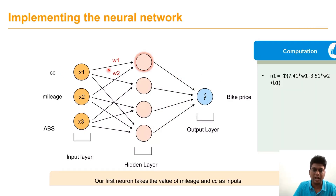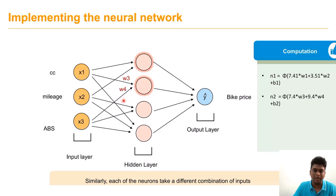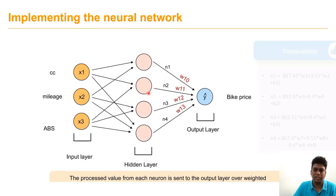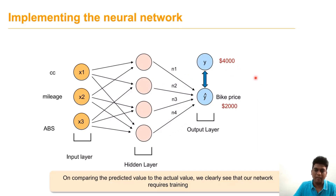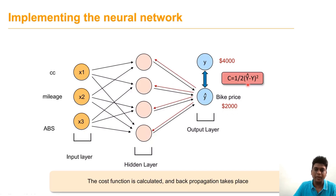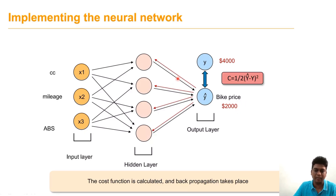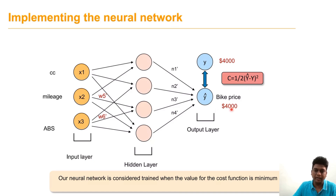The first neuron takes mileage and cc as inputs x1 and x2, assigned weights w1 and w2. These values are projected and added with the bias, then the activation function σ is calculated. Similarly, each neuron takes different combinations of inputs — n2, n3 — each with corresponding activation functions. The processed value from each neuron is sent to the output layer over weighted channels. Here, the actual value is $4,000 but the predicted value is $2,000, so the cost function is very high. We perform back propagation until the predicted value matches the actual value and the cost function equals zero, updating weights until the cost function is minimized.